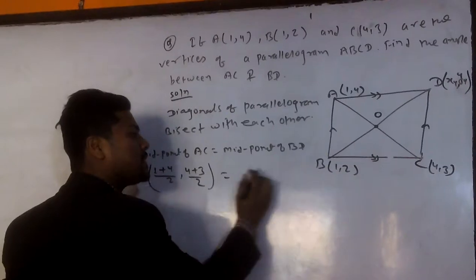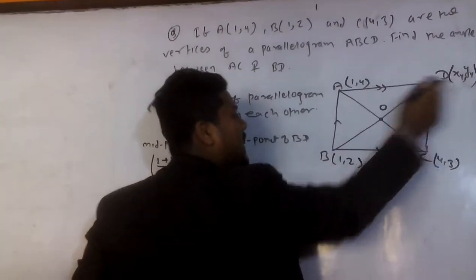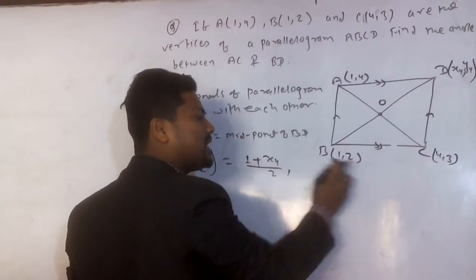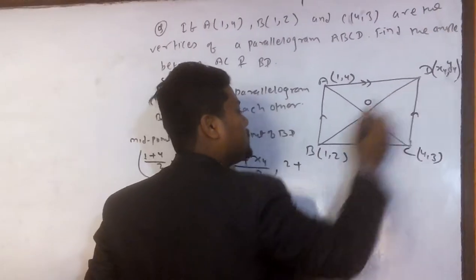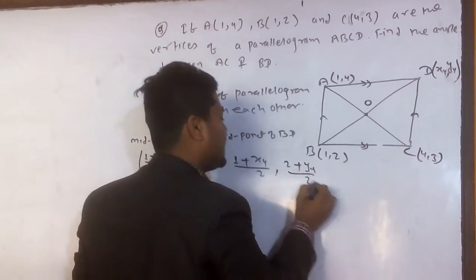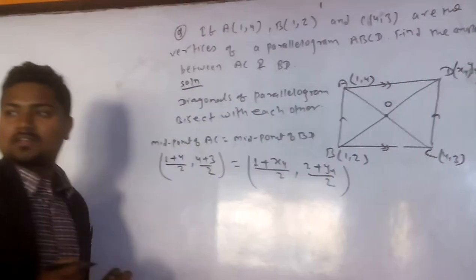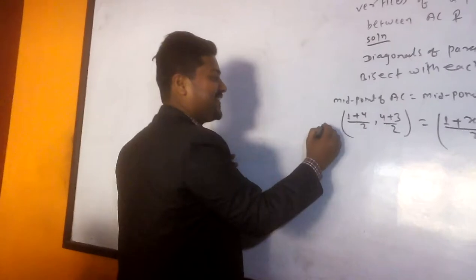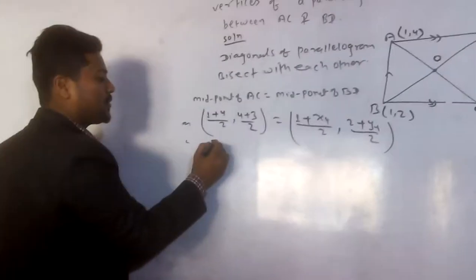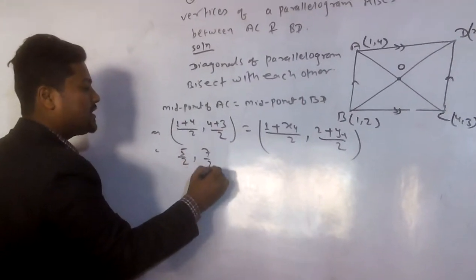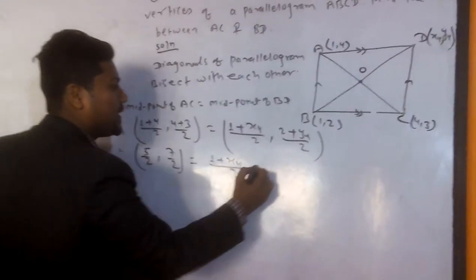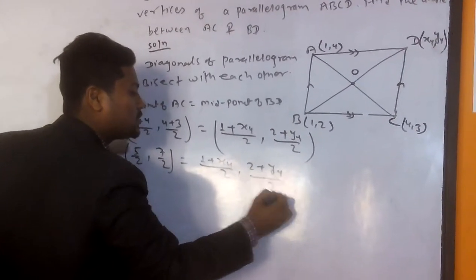Is equals to midpoint of BD. So now BD here, X1 means what here? 1. And X2 means what? X4. By 2 comma Y1 means what here? 2 plus Y2 means here Y4 divided by 2. You understood these things sir? Yes sir. Yes? You are understood? Yes sir. Okay. So now 1 plus 4, 5 by 2, 7 by 2 is equals to 1 plus X4 by 2 comma 2 plus Y4 by 2.